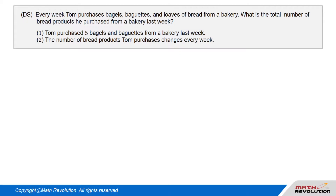Question 2. DS. Every week, Tom purchases bagels, baguettes, and loaves of bread from a bakery. What is the total number of bread products he purchased from a bakery last week? Condition 1: Tom purchased five bagels and baguettes from a bakery last week. Condition 2: The number of bread products Tom purchases changes every week.